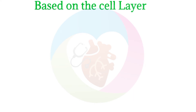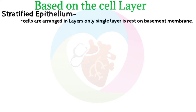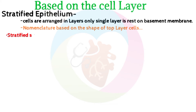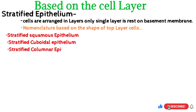Another type based on cell layer is stratified epithelium. In this, cells are arranged in layers, but only a single layer rests on the basement membrane. The nomenclature of stratified epithelium is based on the top layer cells. Types include stratified squamous epithelium, stratified cuboidal epithelium, and stratified columnar epithelium.